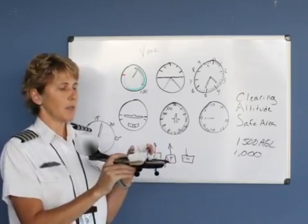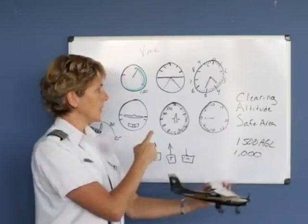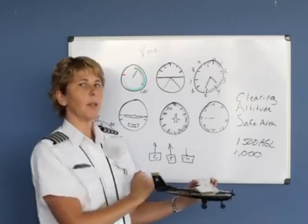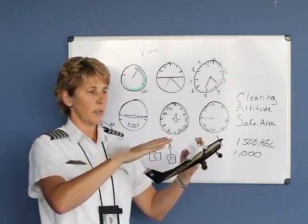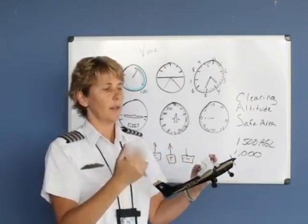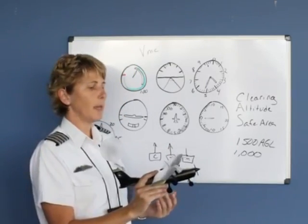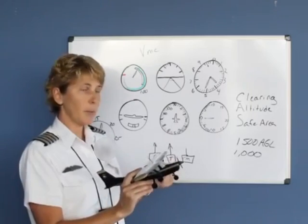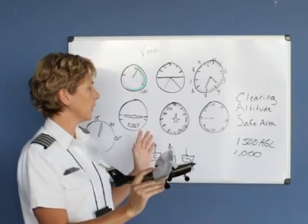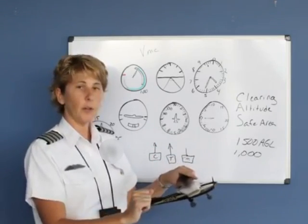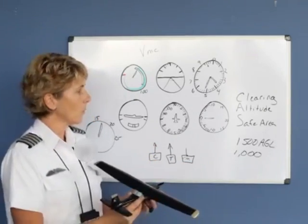This may seem odd because normally if you want to go faster you add power and the plane goes faster. But in this situation, even adding more power won't increase speed — it will only cause the airplane to climb. This is because we are on the backside of the power curve, also called the area of reverse command. In this configuration, pitch predominantly controls airspeed, and power predominantly controls altitude.